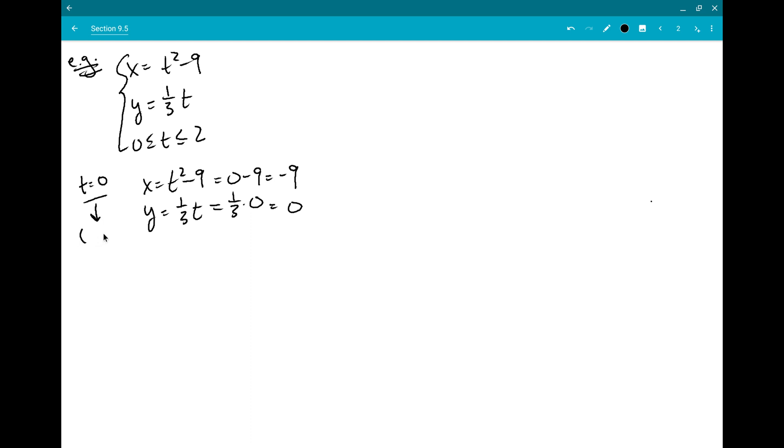And so this tells us that at t equals 0, the coordinate given by this parametric equation puts us at minus 9 comma 0. We could go ahead and keep doing this for t equals 1. t squared minus 9 gives us 1 minus 9, that's minus 8. And y equal to 1 third t just gives us 1 third times 1, a third. So that's at the point minus 8, a third.